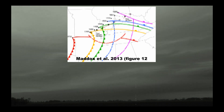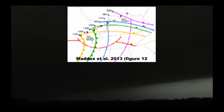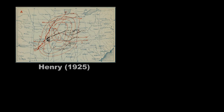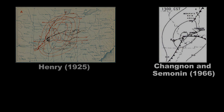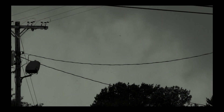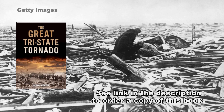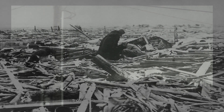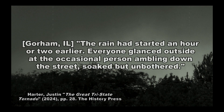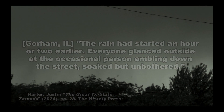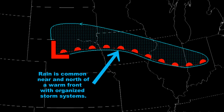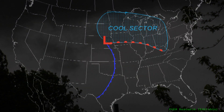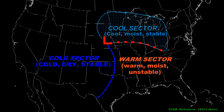One important factor for the Tri-State Tornado appears to have been the position of the warm front, or more specifically, its parent storm's position relative to the front. Even as early as Alfred Henry's 1925 analysis of the event, researchers depicted the supercell as being in close proximity to the synoptic low. And indeed, we can find evidence of the cell's adjacency to the cool sector through eyewitness reports. In the book 'The Great Tri-State Tornado,' author Justin Harder compiles historical accounts of the event, providing important context from the people who experienced it. He writes: 'The rain began falling more steadily through the morning.' And later on, ahead of the tornado's path in Gorham, Illinois, 'the rain had started an hour or two earlier. Everyone glanced outside at the occasional person ambling down the street, soaked but unbothered.' These reports of rain and cool temperatures leading up to the tornado point to the storm's close proximity to the warm front. Furthermore, reports of rising temperatures and gusty winds immediately before the tornado revealed that the supercell was likely moving along or near the boundary, with its inflow drawing on the warm, moist maritime tropical air to the south.